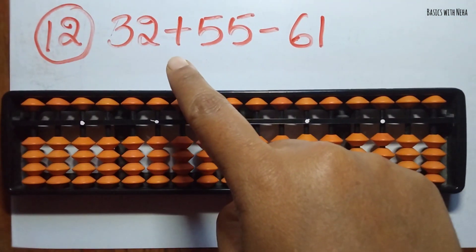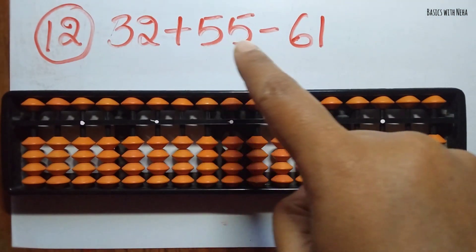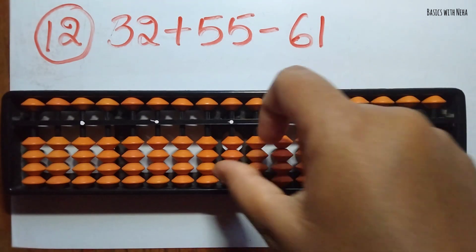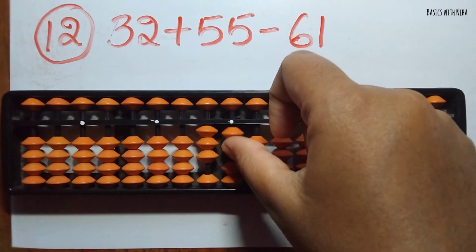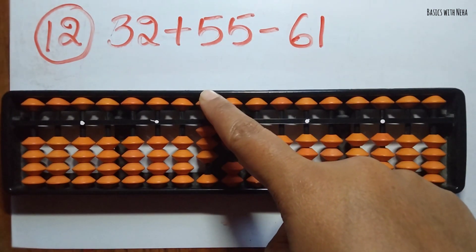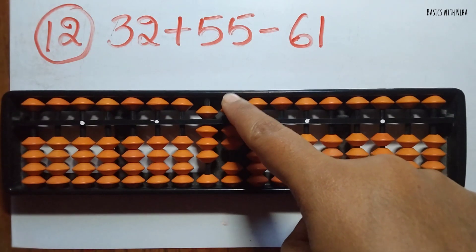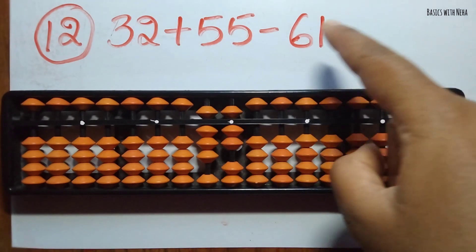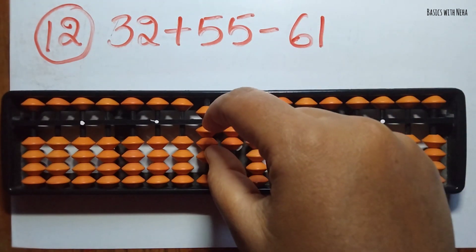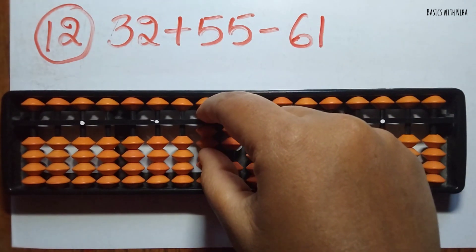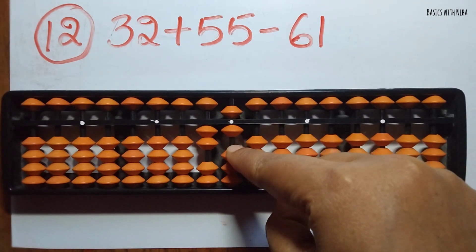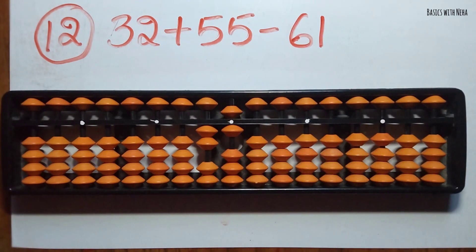The twelfth sum: 32 plus 55 minus 61. First take 32 and add 55 — you can add 5 and 5 directly. Now minus 61 — minus 6 can be done directly in the 10's rod and minus 1 can be done directly in the 1's rod.